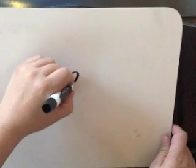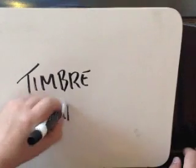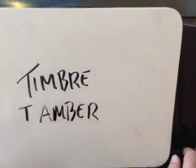Also on page 27, there's another term. Let's get the pronunciation correct to begin with — it's not 'timbre,' it's not 'timbre,' it's 'timbre,' okay? It's like the word amber but with a T at the beginning.